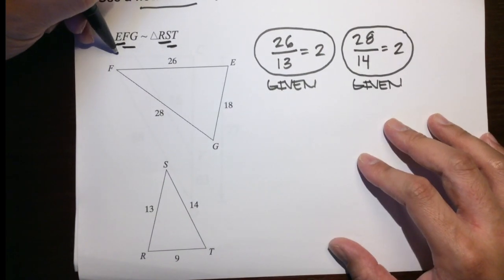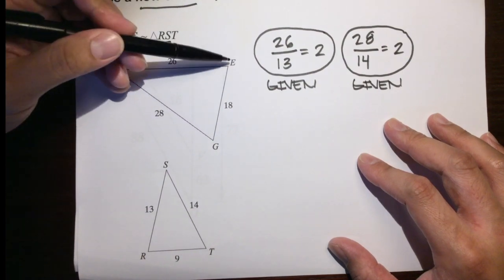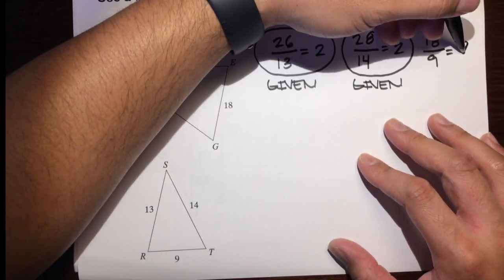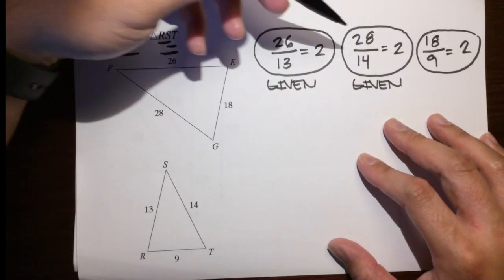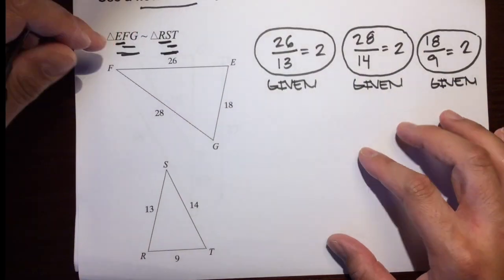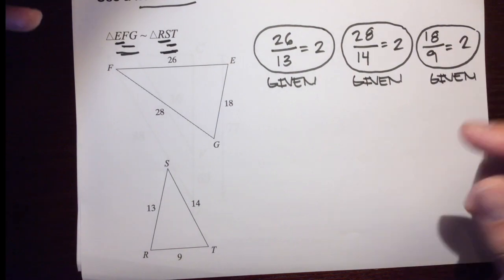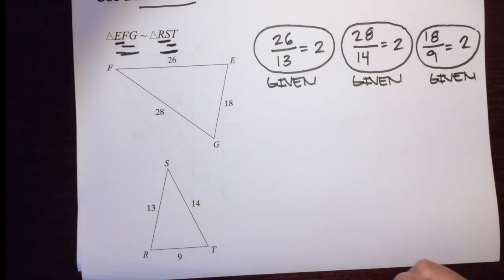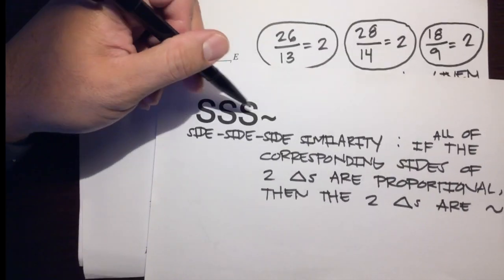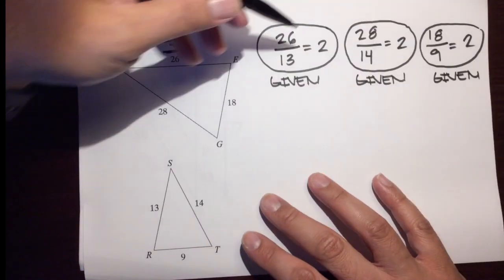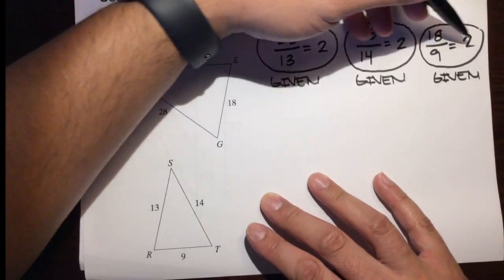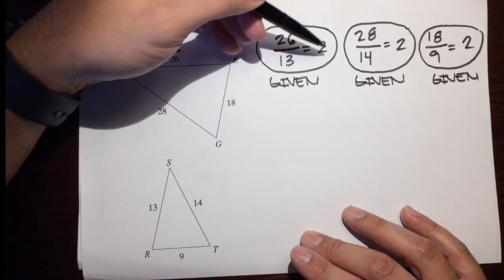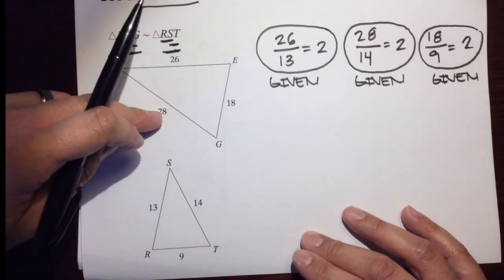Now let's look at EG and RT. EG is the shortest side and RT is the shortest side. So let's write 18 over 9, and 18 over 9 is 2. And that was given to us. So it's really important that you make your bubbles. We want to prove that all three sides are proportional and give reasons. All three ratios simplify to 2, showing all three pairs of sides are proportional.